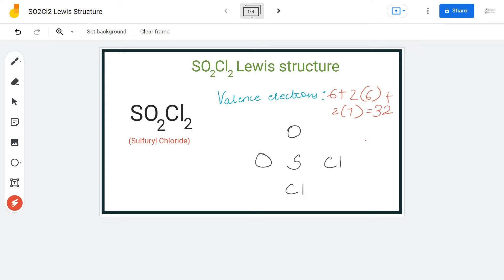For the arrangement of this molecule, we will place sulfur atom in the center and all the oxygen and chlorine atoms will be arranged around this atom like this. To show a bond between these atoms, we will place a pair of electrons between sulfur and chlorine atoms and sulfur and oxygen atoms.